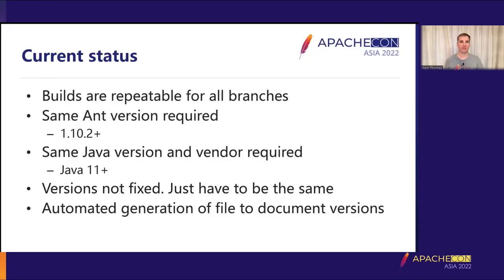So where are we at the moment? The current status is that we have repeatable builds available for all currently supported branches of Tomcat: 8.5, 9.0, 10.0, and 10.1. However, for the builds to be repeatable, you must use the same Ant version and the same Java version and vendor that the release manager used. Those versions aren't fixed to specific ones — they just have to be the same. To help with that, Tomcat committer Chris Schultz wrote an extension to our build script that generates a file at the top of the source tree providing all the information needed to create a repeatable build, and automatically sets up the Ant properties, making the process as simple as possible.